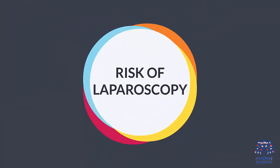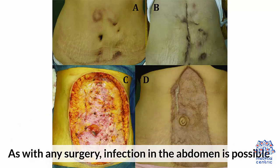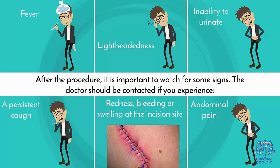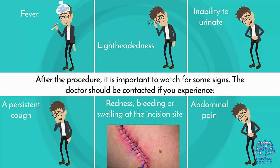Risks of Laparoscopy: Complications are rare, but a puncture to a blood vessel or organ may cause bleeding or injury to the organ. As with any surgery, infection in the abdomen is possible. After the procedure, it is important to watch for signs such as fever, lightheadedness, inability to urinate, a persistent cough, redness, bleeding or swelling at the incision site, and abdominal pain that gets intense over time.